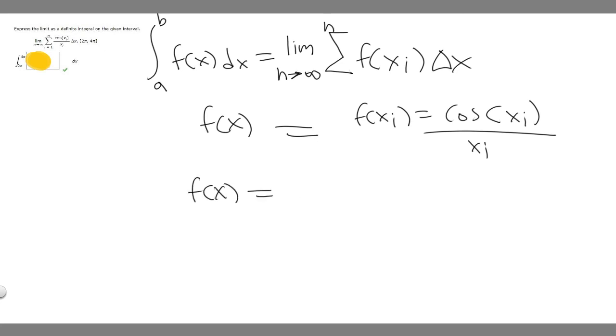So f(x) equals cosine - we have an x sub i here, so we replace it with x over, then we have x sub i here, replace it with another x. This is what it's going to be.